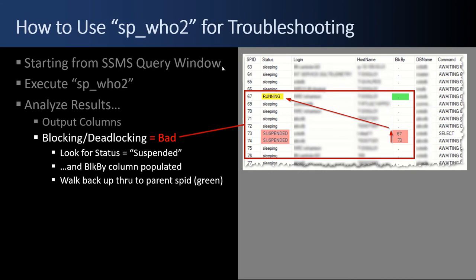So before we get started, just a quick level set. This is what the output of SP_Who2 looks like. You have the SPID, the status — I've blurred out the login and host name — you have a Blocked By column that's really important, the database name, command, etc., and it goes off to the right with a bunch of useful columns. Now, one of the most useful things I use SP_Who2 for is to identify blocking and deadlocking, which is bad. I start by looking for a status of suspended on any given rows. When I find suspended, I immediately go over to the Blocked By column — there are other reasons a session may be suspended, but if it's blocking or deadlocking, it'll be suspended and have a Blocked By value.